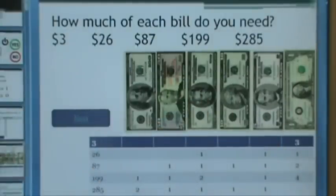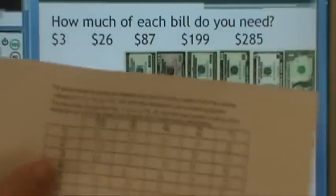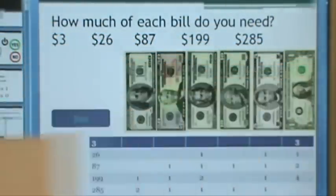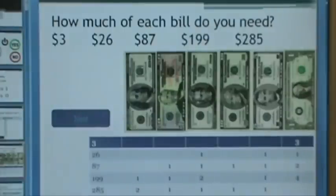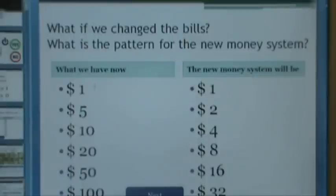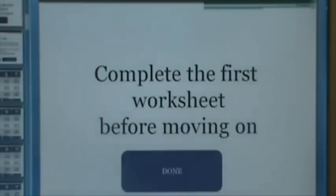But with binary, instead of those values, we're looking at the 1, the 2, the 4, the 8, and the 16. So here's the start of the worksheet - instead of these dollar bills, we have the 1, 2, 4, 8, 16, 32. And then I tell them to complete the first worksheet, which was this one here.